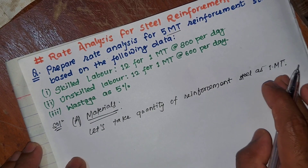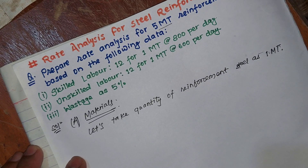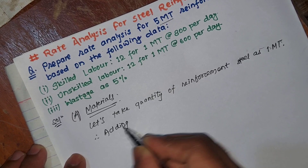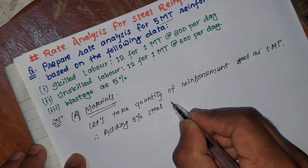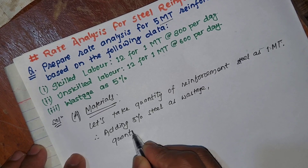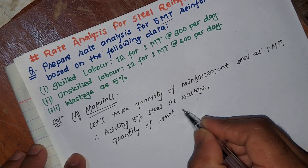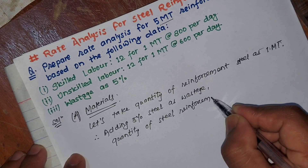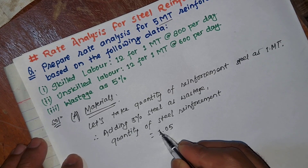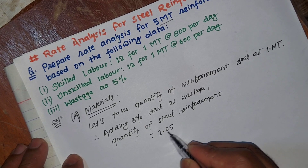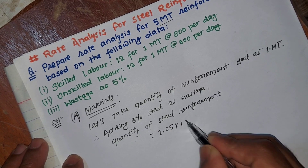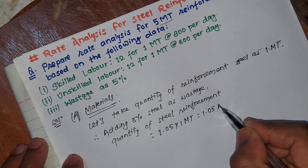Let's take quantity of reinforcement steel as 1 metric ton. Adding 5% steel wastage, total reinforcement is equal to 1 + 5/100 = 1.05. So 1 metric ton becomes 1.05 metric ton.